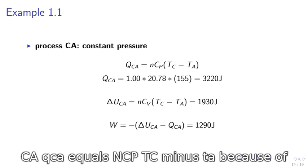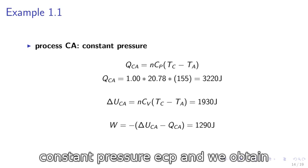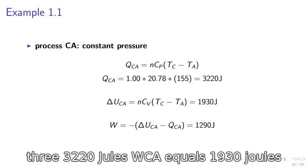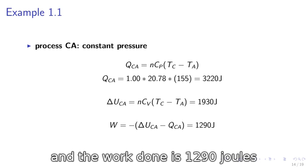Process CA. QCA equals NCP(TC minus TA). Because of constant pressure we use CP. And we obtain 3,220 joules. Delta UCA equals 1,930 joules. And the work done is 1,290 joules.